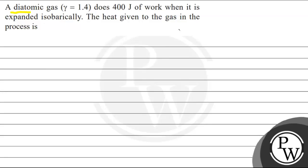Hello, let's read this question. The question says that a diatomic gas gamma equals 1.4 does 400 J of work when it is expanded isobarically. The heat given to the gas in the process is